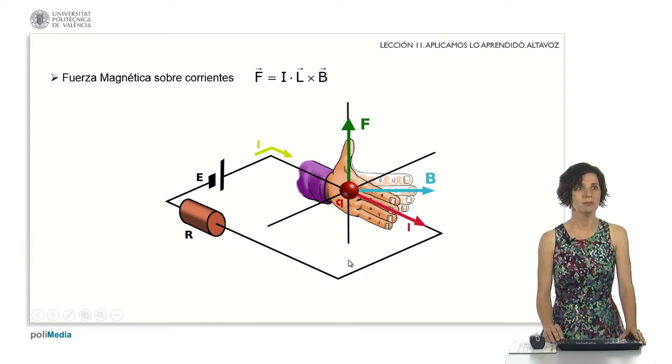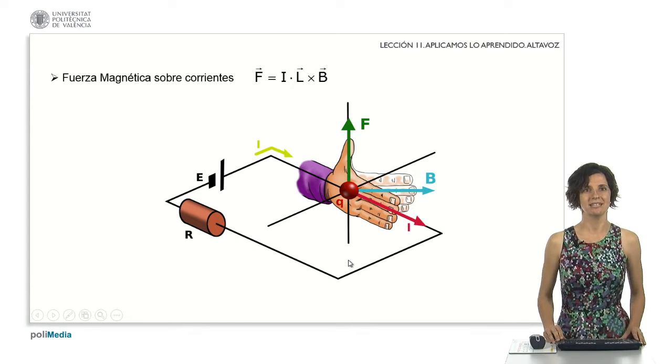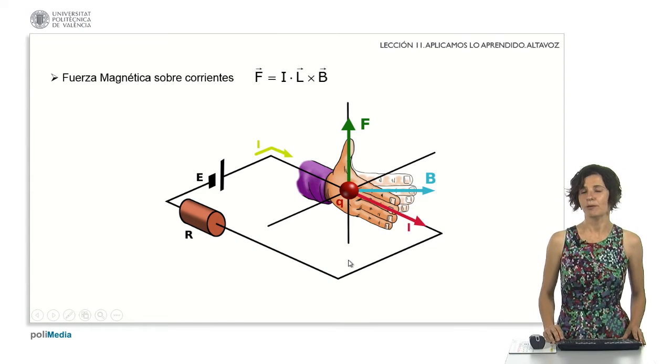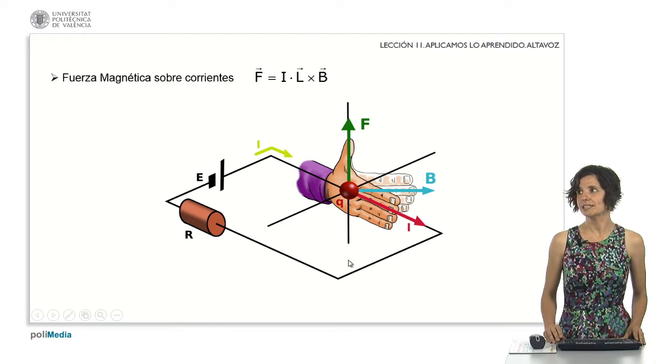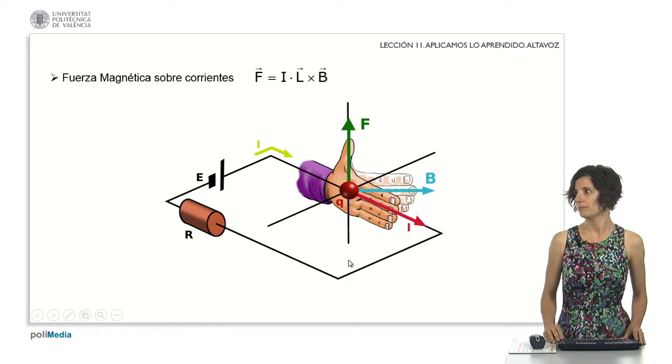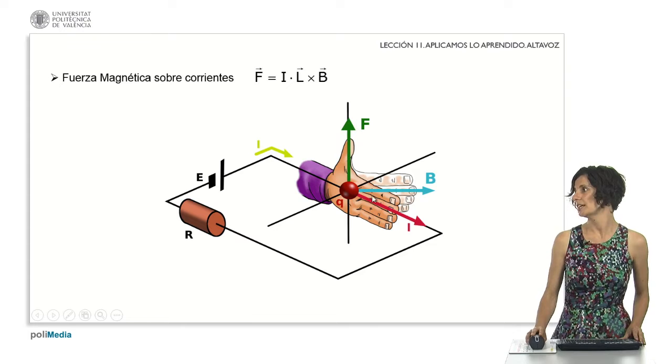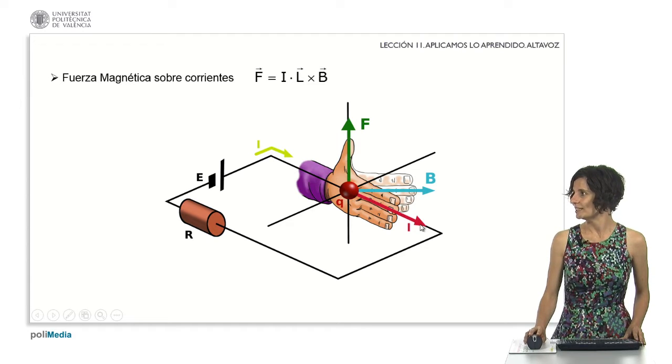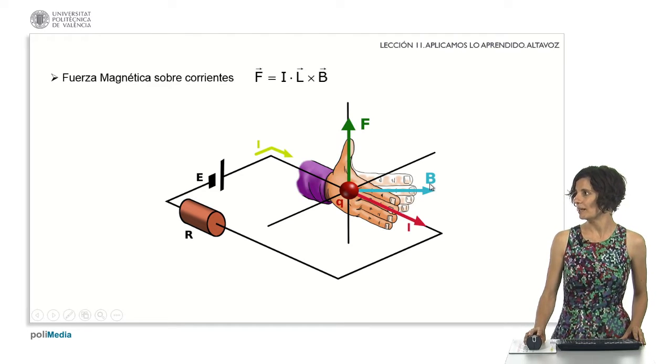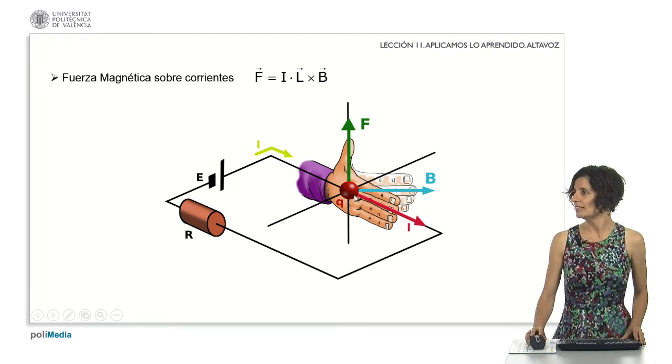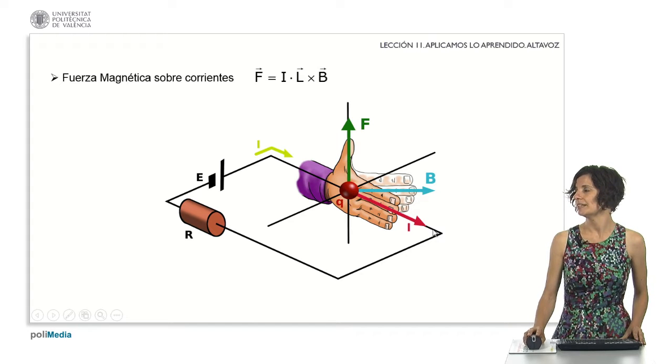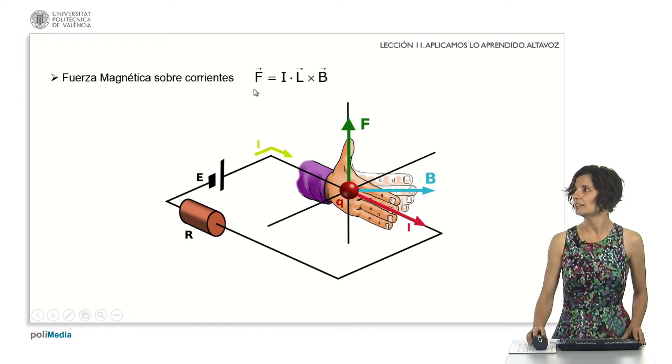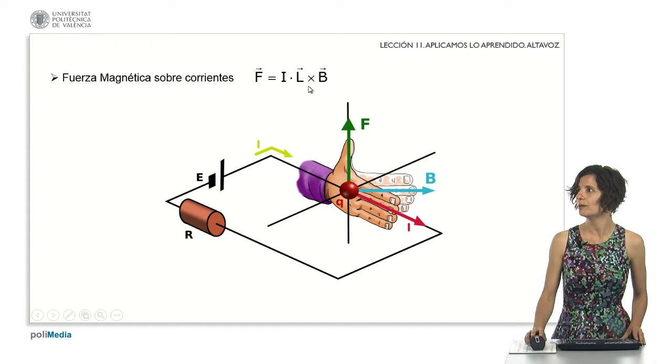But what's the physical principle underlying the loudspeaker? It's the magnetic force acting on currents, which you previously learned about in lesson 9. We saw that when a current is immersed in a constant magnetic field, this straight section is subjected to a force given by this expression. The force is equal to the current intensity multiplied by the vector product between the length vector and the magnetic field vector, F = I·L×B.